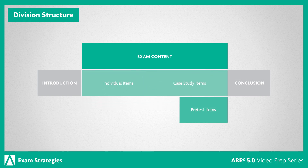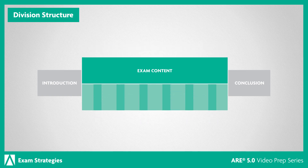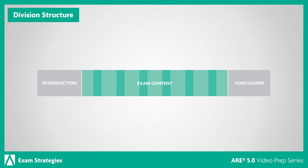Pre-test items are included on all divisions so NCARB can collect statistics and determine if they should be used in the future. They're distributed randomly throughout the exam content portion, but are unscored and have no impact on your overall results. Since there is no way of knowing which questions might be a pre-test item, it's best to approach all items as if they will affect your score.